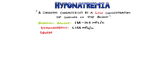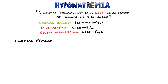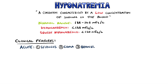but severe hyponatremia is seen when the level goes below 120 mEq per litre. If this change happens acutely, it tends to be more severe and may be associated with seizures, coma, brainstem herniations and death.